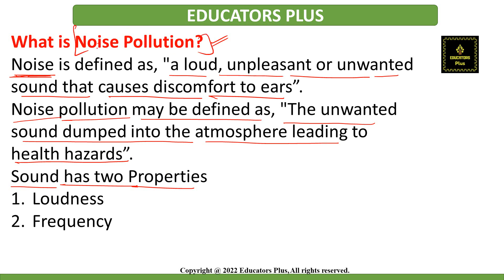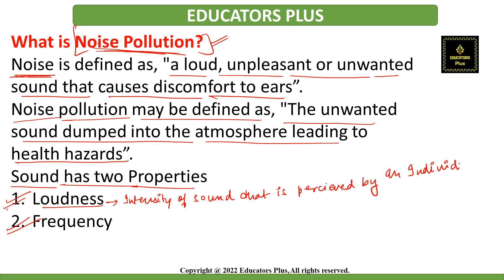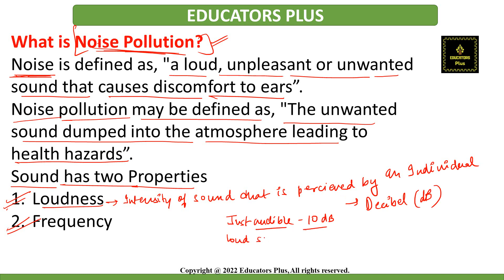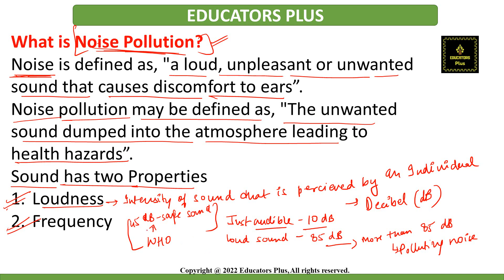Now, sound has two properties by which it is measured. The first property is its loudness and the second property is frequency. Talking about loudness, it is basically the intensity or the strength of sound that is perceived by the individual, and it is measured in terms of decibels (dB). The sound that is just audible is about 10 decibel. The loudest sound a person can hear without much discomfort is 80 decibel, and above 80 decibel is considered as polluting noise.